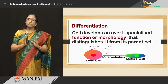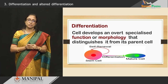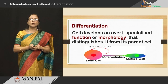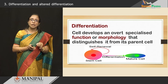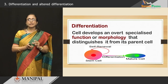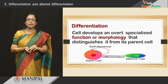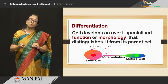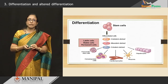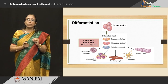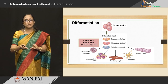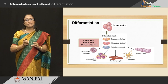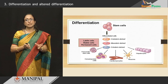Now, the definition of differentiation: cells which develop overt specialized function and morphology that distinguishes them from their parent cell are called differentiated cells. This differentiated cell has specialized function and appearance different from the parent cell. The parent cells are always stem cells. When we have pluripotent stem cells, they can differentiate into cells of various types derived from ectoderm, endoderm, and mesoderm, and depending on regenerative capacity they can be labile, stable, or permanent cells.